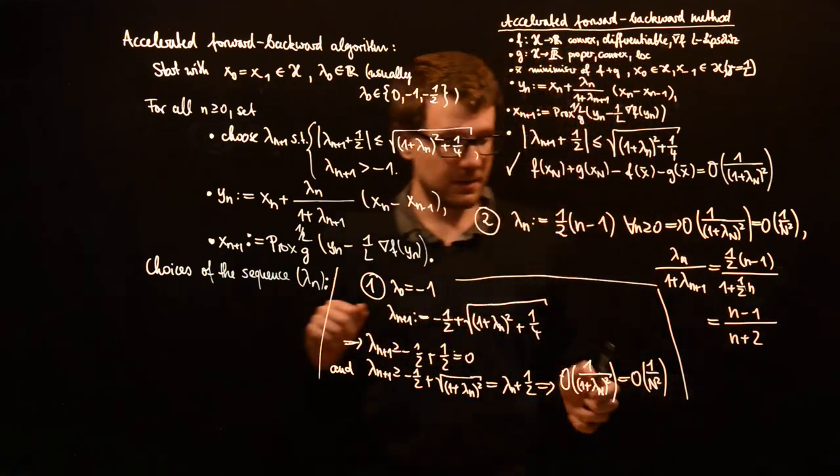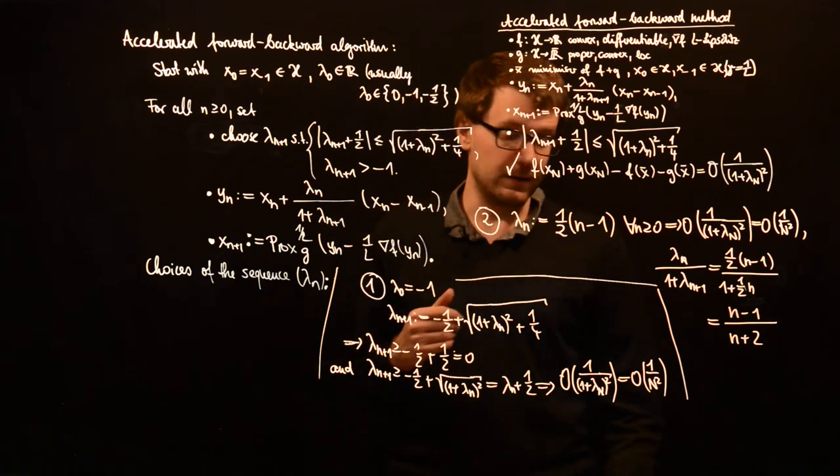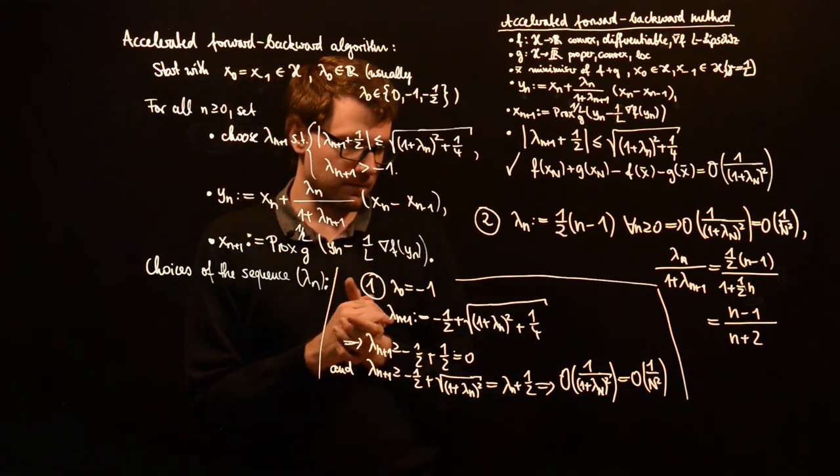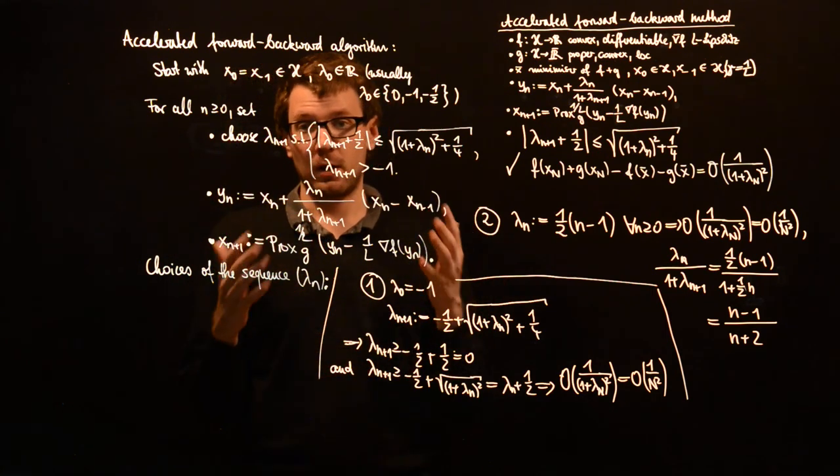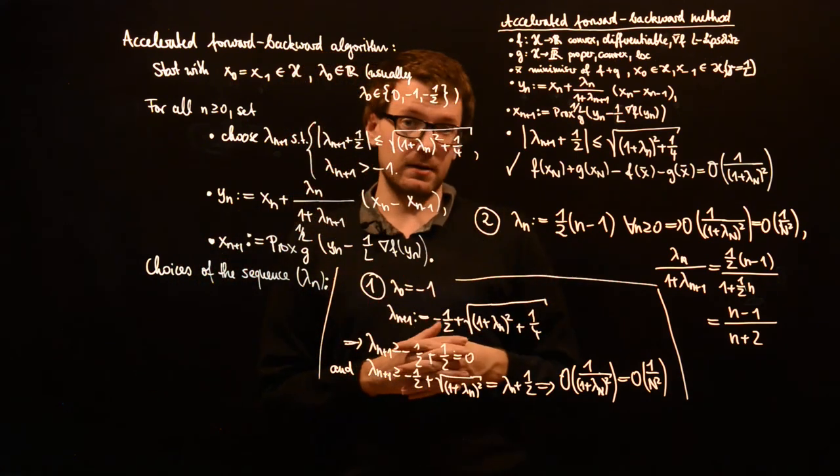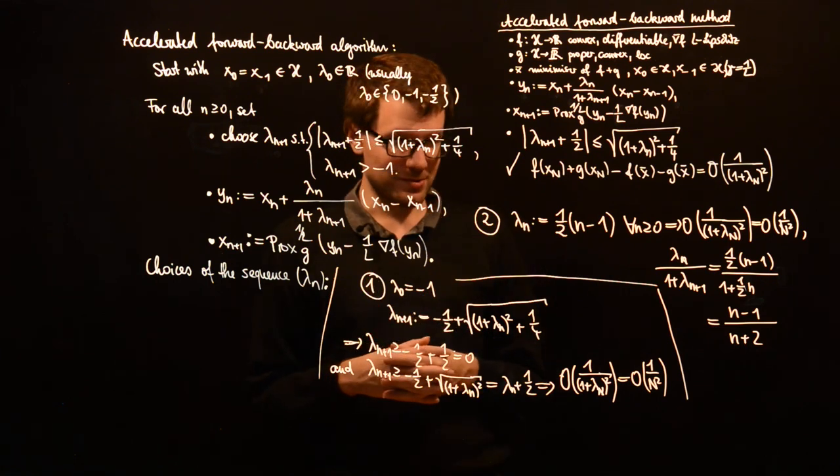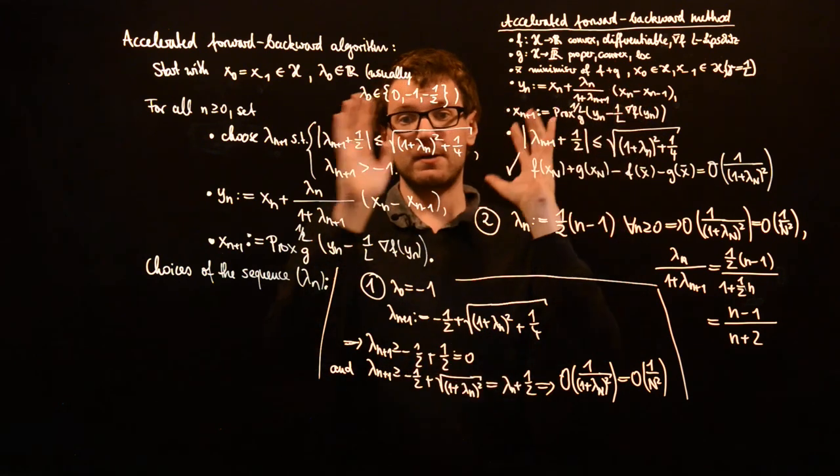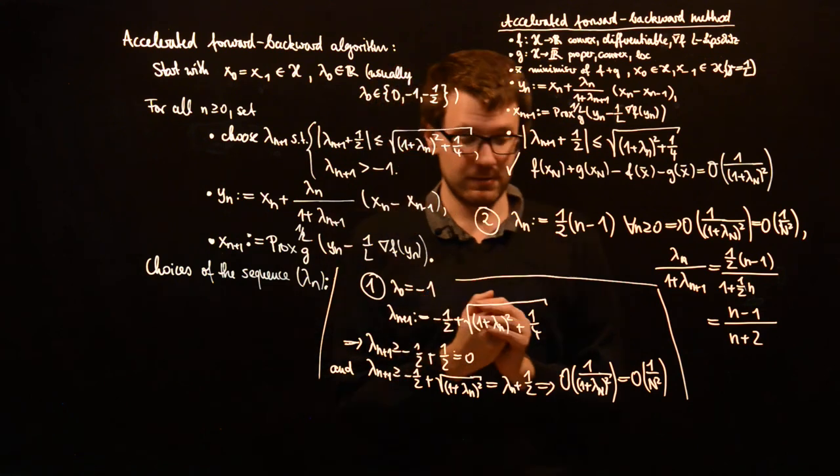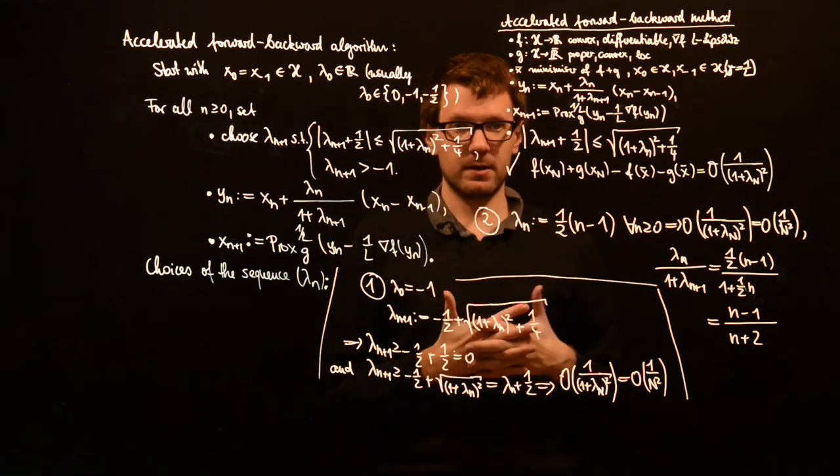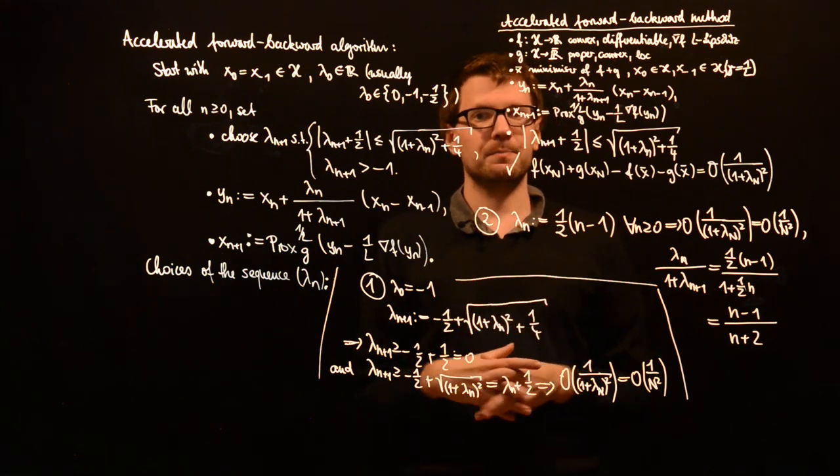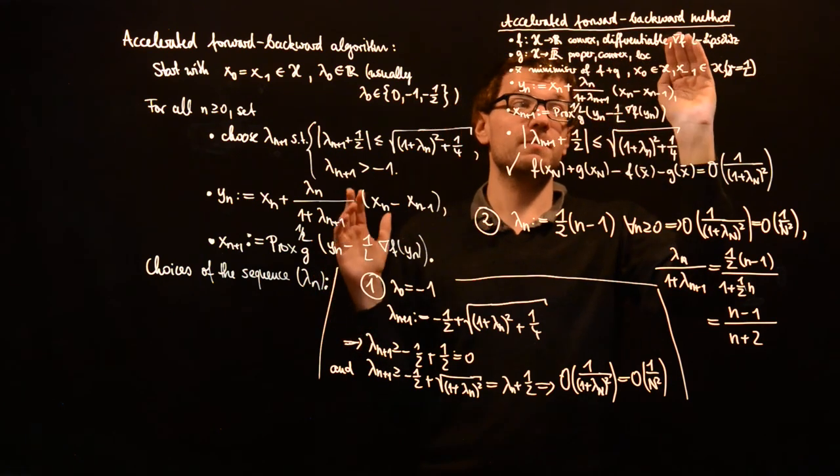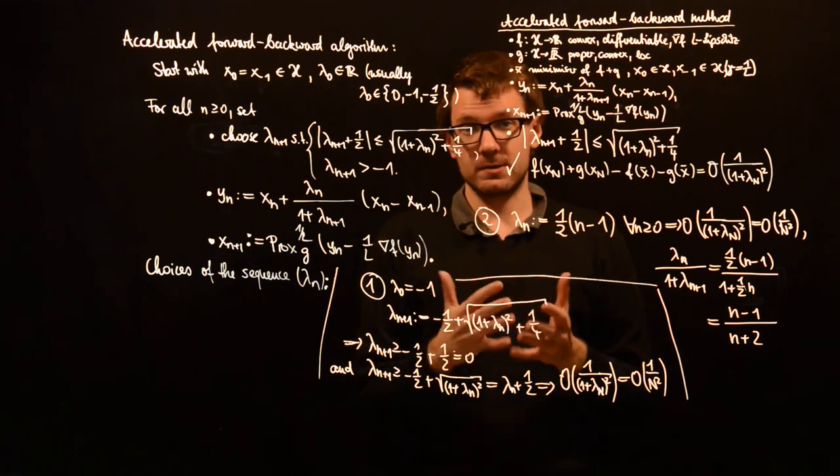So both of these choices give you a convergence rate of O of one over n squared for the gap here. And this is obviously a lot better than the O of one over n which we got for the forward-backward algorithm. And practical experience also shows that the convergence rate in practice is much better for the accelerated forward-backward method than it is for the normal forward-backward method. And with this, I want to conclude the section on the methods for a sum of a convex differentiable function with Lipschitz gradient and a proper convex lower semi-continuous function.